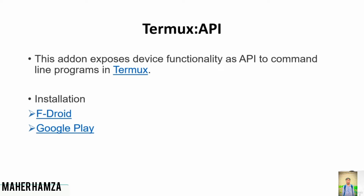Termux API is an add-on that exposes device functionality as an API to command line programs in Termux. Using Termux API, you can control your hardware — you can turn your torch on or off, scan your Wi-Fi, and do a lot more things just by using Termux API.